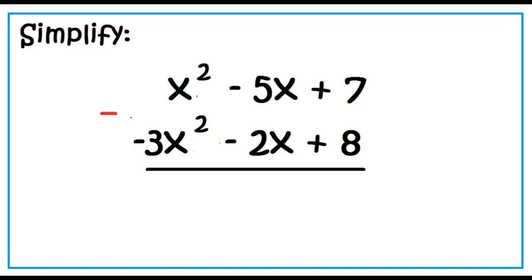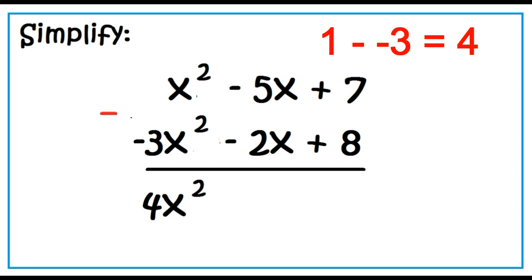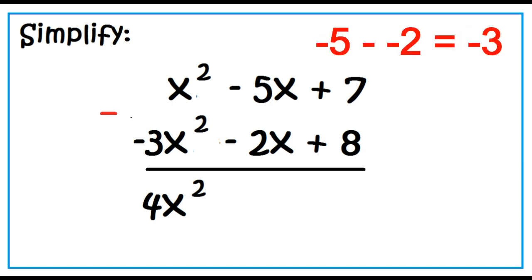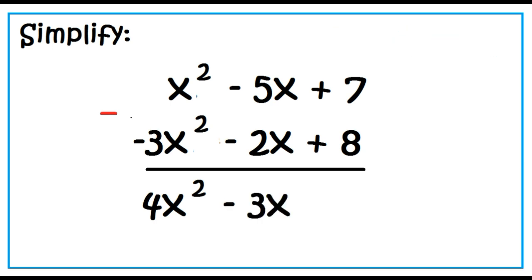Simplify: the quantity x squared minus 5x plus 7, minus the quantity negative 3x squared minus 2x plus 8. x squared minus negative 3x squared is 4x squared; negative 5x minus negative 2x is negative 3x; 7 minus 8 is negative 1.